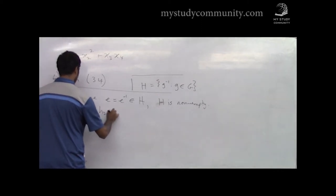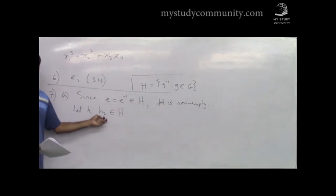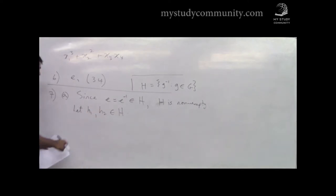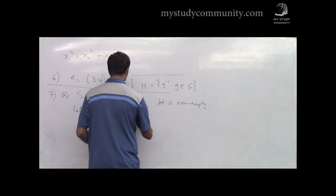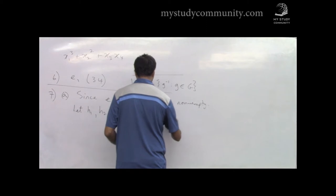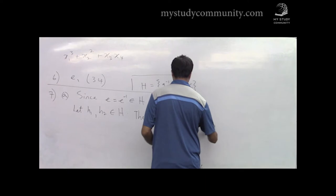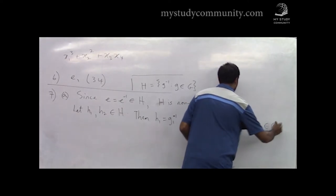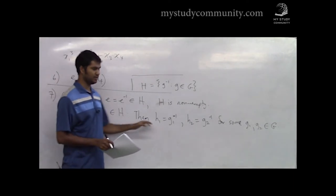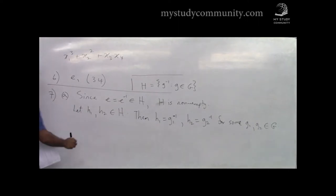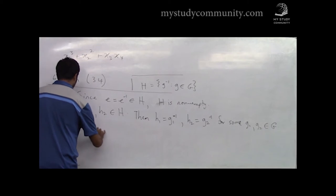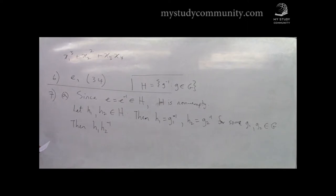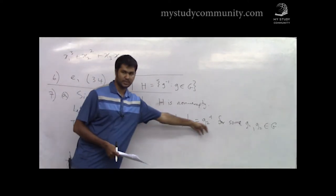Let h₁ and h₂ be two elements in H. We need to show h₁·h₂⁻¹ is in H. By the definition of H, h₁ = g₁⁻¹ and h₂ = g₂⁻¹ for some g₁, g₂ ∈ G. So h₁·h₂⁻¹ = g₁⁻¹·(g₂⁻¹)⁻¹.